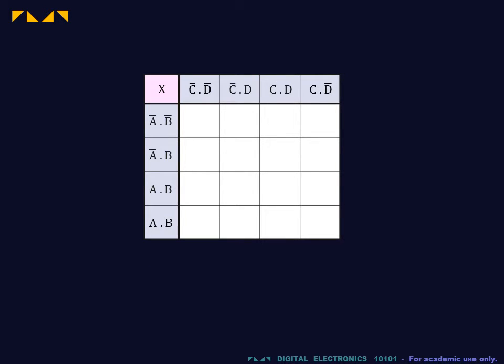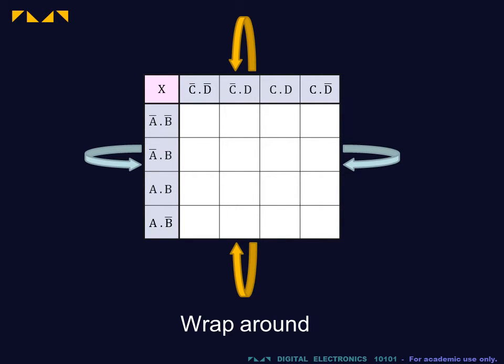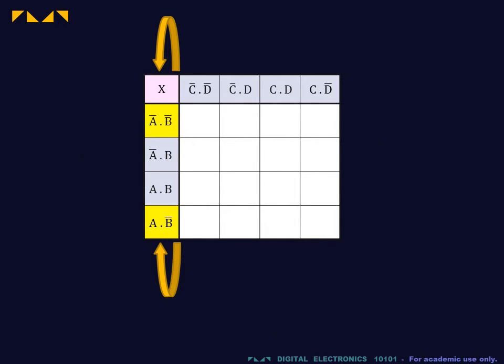The second important property is that the map wraps around both horizontally and vertically. The map should therefore be thought of as the surface of a sphere. Note that the adjacency property applies to the wraparound.